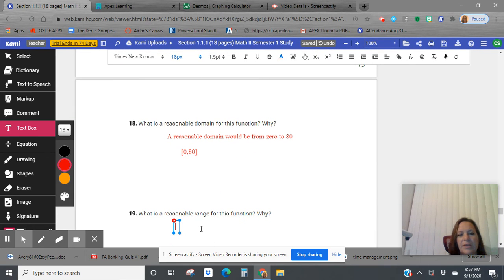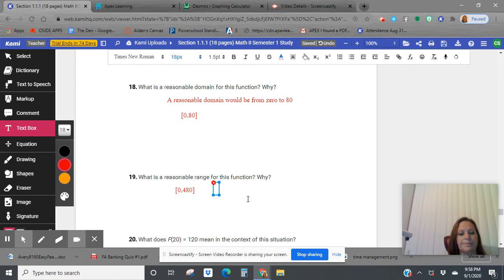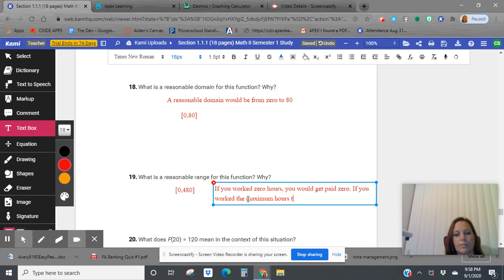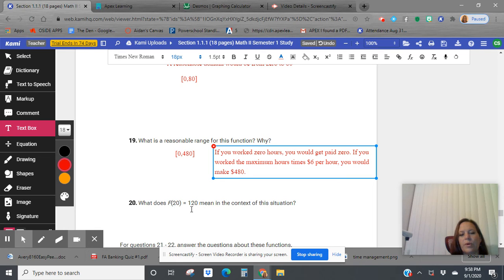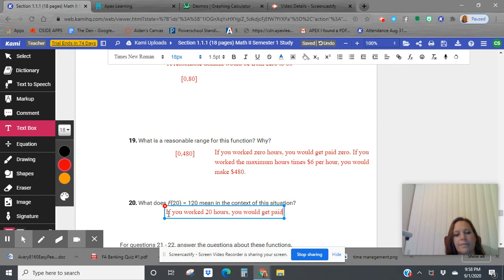What's a reasonable range? So if you work zero hours, you would get zero paycheck. And if you work 80 hours at $6 an hour, 80 times six gives us 480. So that would be the max you could work. You could get paid based on your max input. If you work zero hours, you would get paid zero. If you work the maximum number of hours, $6 an hour, you'd make 480. What does f of 20 equals 120 mean in the context of this? It means if you work 20 hours, you would get paid $120.